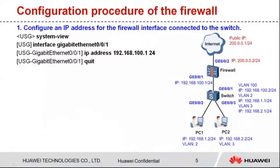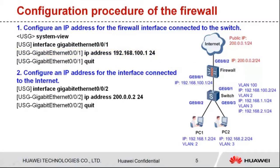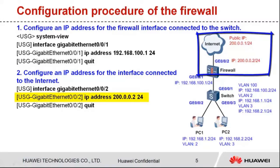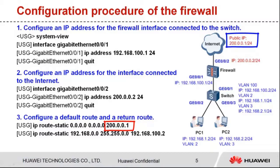Let's see the configuration procedure of the firewall. There are five steps. Step 1: Configure an IP address for the interface connected to the switch. The IP address is the next hop address of the switch's default route. Step 2: Configure an IP address for the interface connected to the internet. The configured IP address and the public IP address are in the same network segment. Step 3: Configure a default route and a return route. The next hop address of the default route is 200.0.0.1, which is a public IP address.